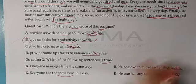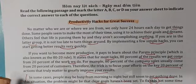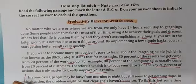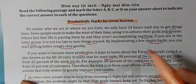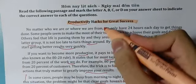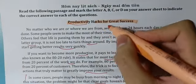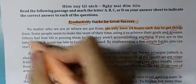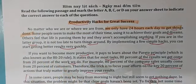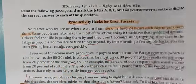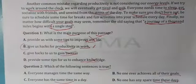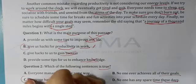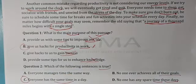Nhìn đoạn văn đầu tiên: chúng ta chỉ có 24 giờ mỗi ngày để hoàn thành những gì mình mong muốn. Vậy câu đúng phải là: tất cả mọi người trong chúng ta đều có khoảng thời gian như nhau.